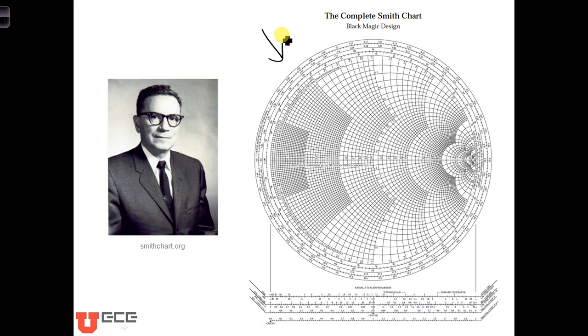And since the characteristic impedance, Z naught, of the transmission line is dictated by the materials and the geometries, we will normalize relative to the characteristic impedance of the transmission line.